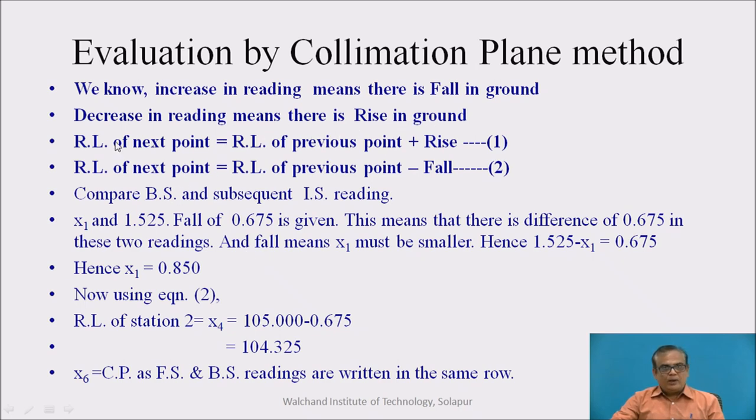Now, equation number 1, RL of next point is equal to RL of previous point plus rise. This is important equation which we know. And RL of next point in case of fall, it is equal to RL of previous point minus fall. That means, if rise is there, you have to add it in the RL of previous point to get RL of next point. And if there is fall, it is equal to RL of previous point. These two equations are important.